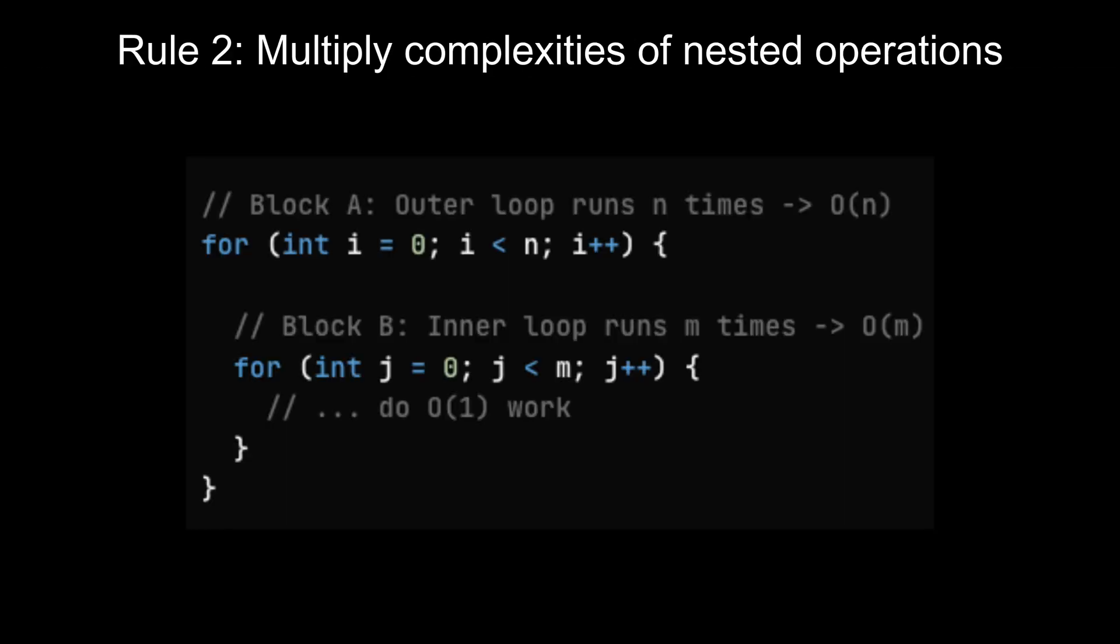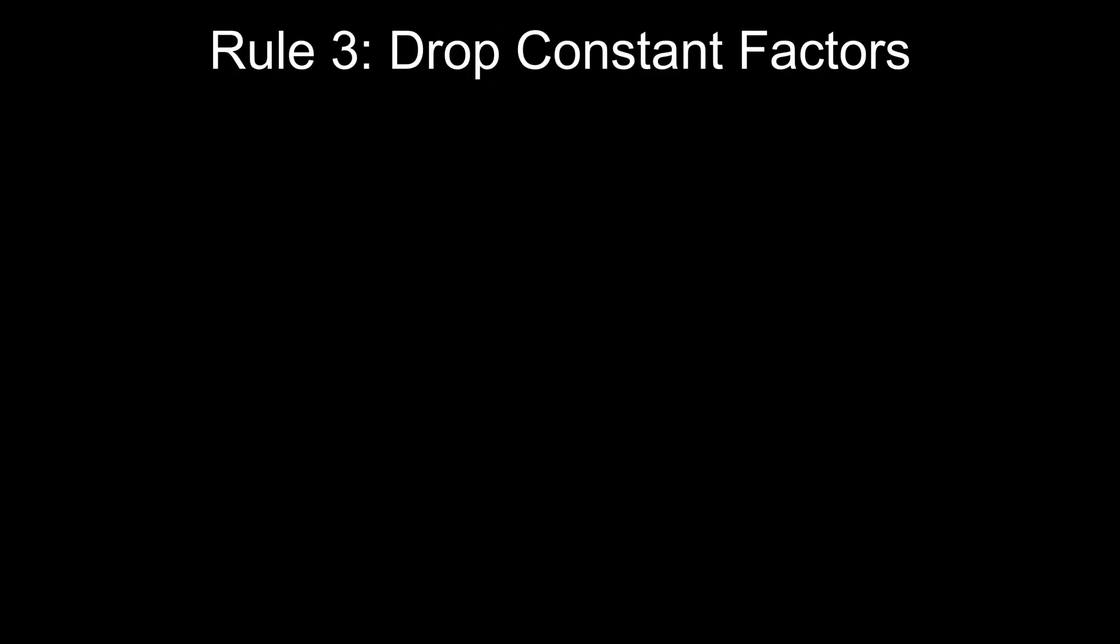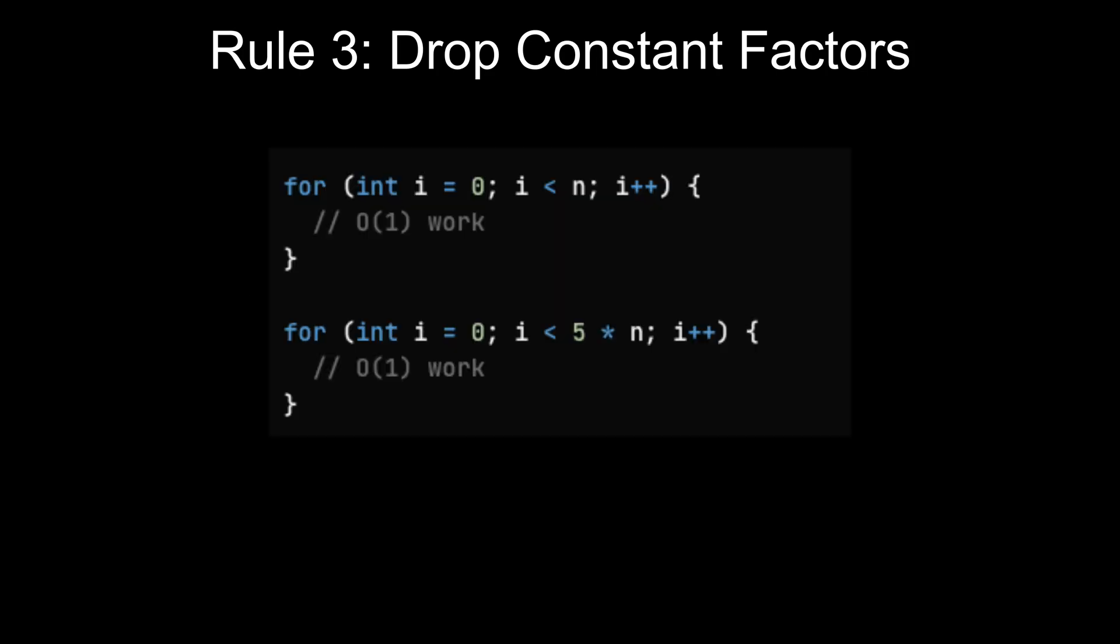Rule 2: Multiply complexities of nested operations. If your algorithm has nested loops with the outer loop running N times and the inner loop running M times, the total complexity is O(N×M). Rule 3: Drop constant factors. We can ignore any constant multipliers in a Big O expression. Big O is not about exact number of steps. It's about how fast your algorithm grows with input. Whether your algorithm takes N steps or 5N steps, both grow linearly as N increases. The constant multiplier doesn't affect the growth trend, so we drop constant factors.